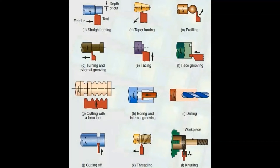The next step involves a corner and angular shape — this is taper turning. The shape produced is an angular shape, and this operation is called taper turning. The next process is profiling.